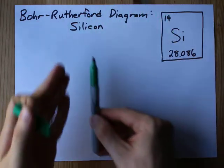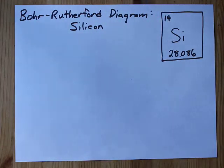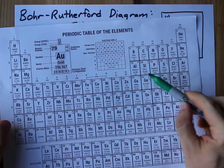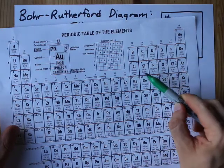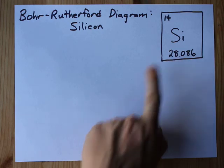Let's draw the Bohr-Rutherford diagram for silicon, the 14th element in the periodic table. It's element 14 and my average atomic mass is 28.